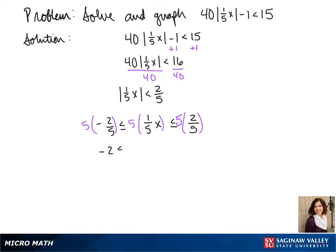This gives us negative 2 is less than or equal to x and less than or equal to 2. Then we write this in interval notation from negative 2 to 2, both of which are included in our interval, so they both get brackets.